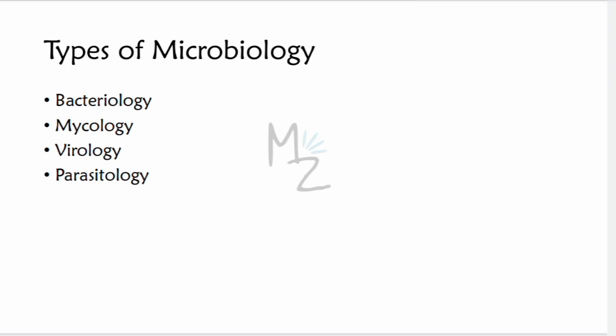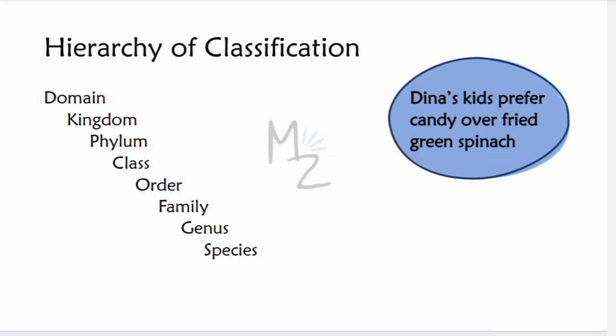Hierarchy of classification: we have Domain, Kingdom, Phylum, Class, Order, Family, Genus, and Species. Discussing them in full detail would make this video much longer. For remembering the hierarchy, I have this mnemonic: 'Dina's Kids Prefer Candy Over Fried Green Spinach.' If you remember this mnemonic, you'll remember the hierarchy of classification.